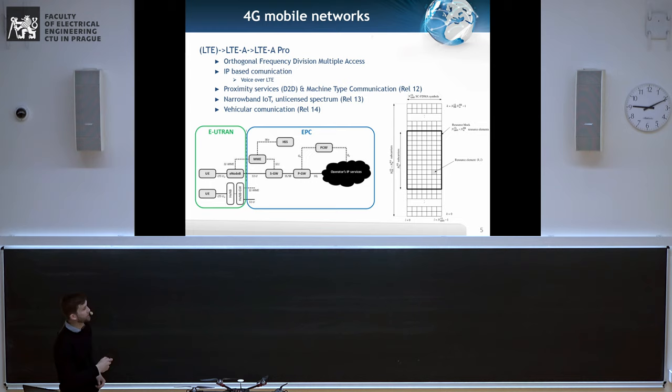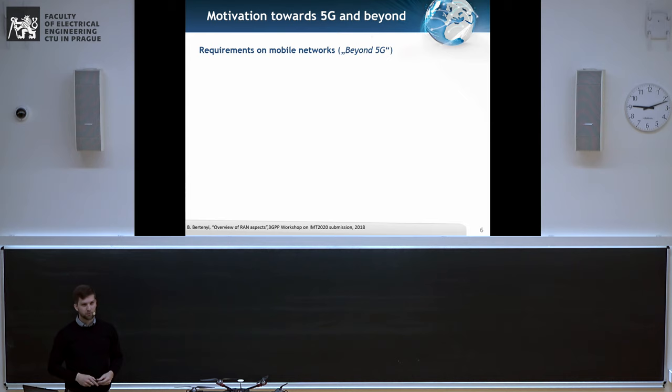And over here is the architecture. Just focus on these two blocks. We have E-UTRAN, basically the radio part. We have those UEs, these are user equipments, those are your phones. We have E-NodeB or HENB, basically the base stations and antennas that you can see around. And then the core network of the operator.